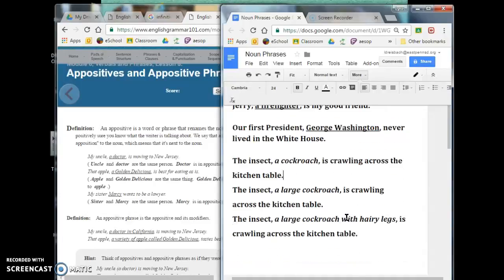Now, I found some weird, kind of gross and funny sentences that I thought I would include here just because they might have a little bit of an effect. So, I found them on a funny grammar website. Here we go. The insect, a cockroach, is crawling across the kitchen table. Here, we just have a plain old appositive.